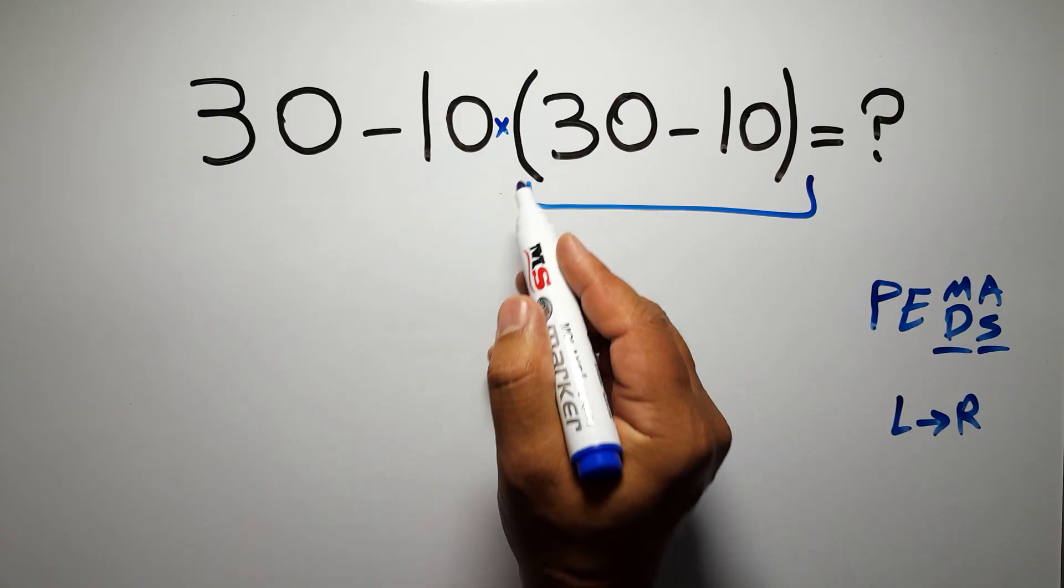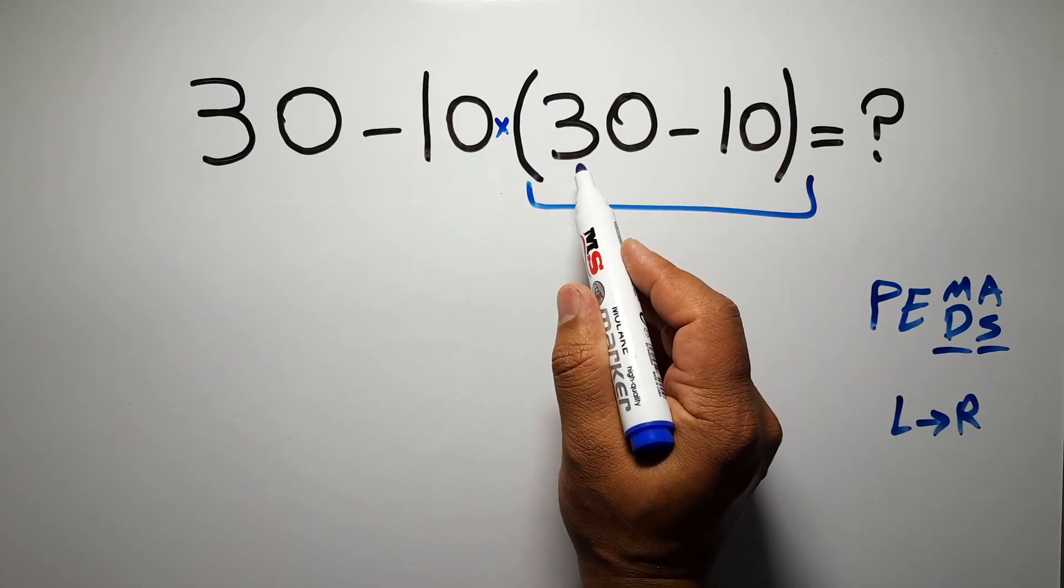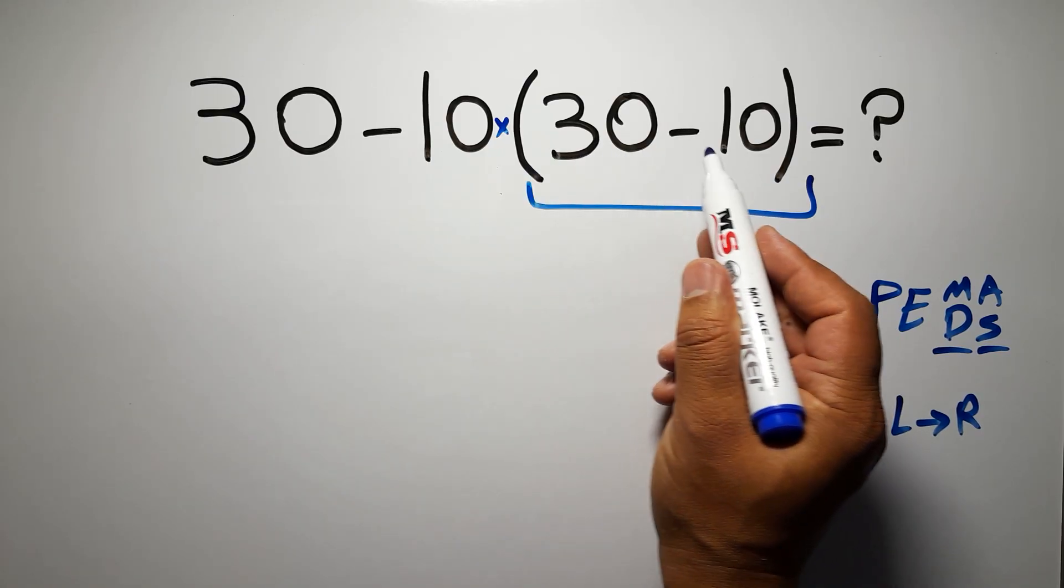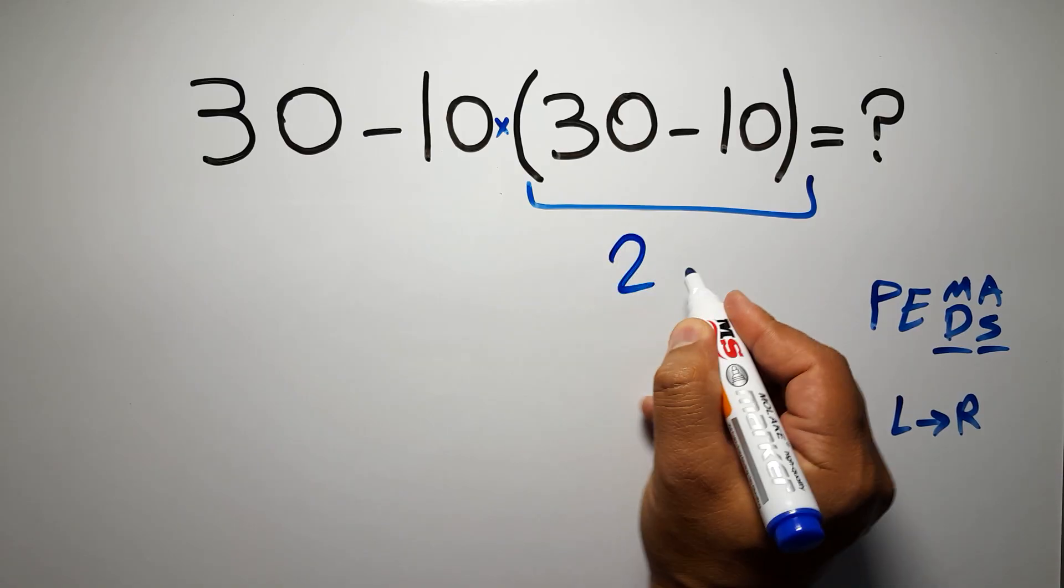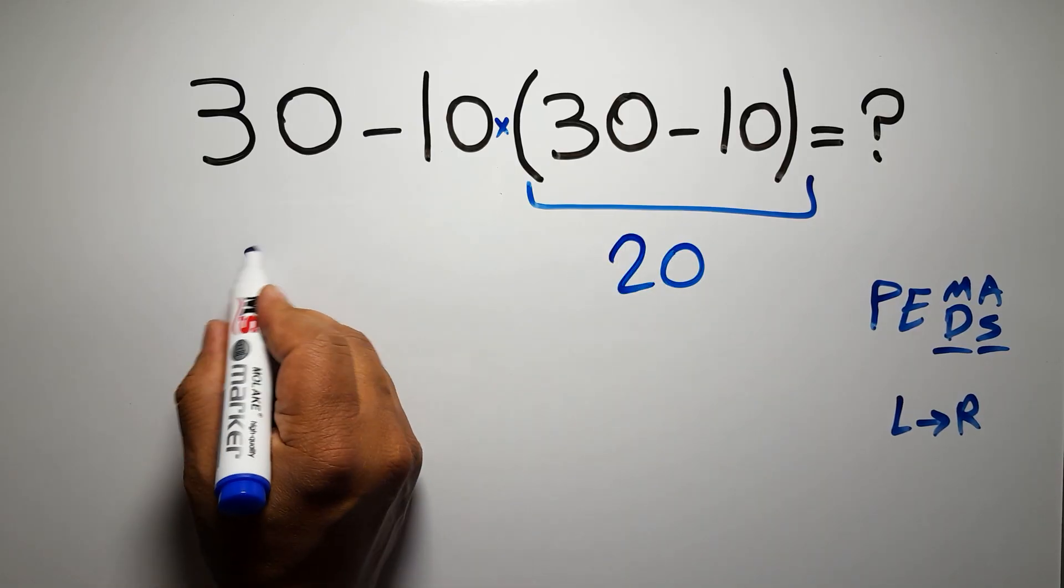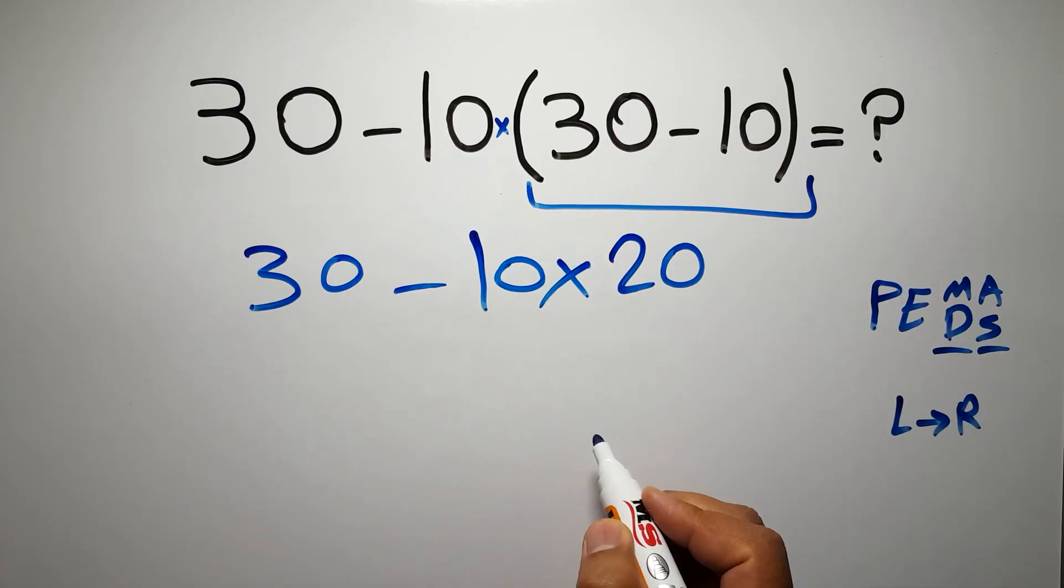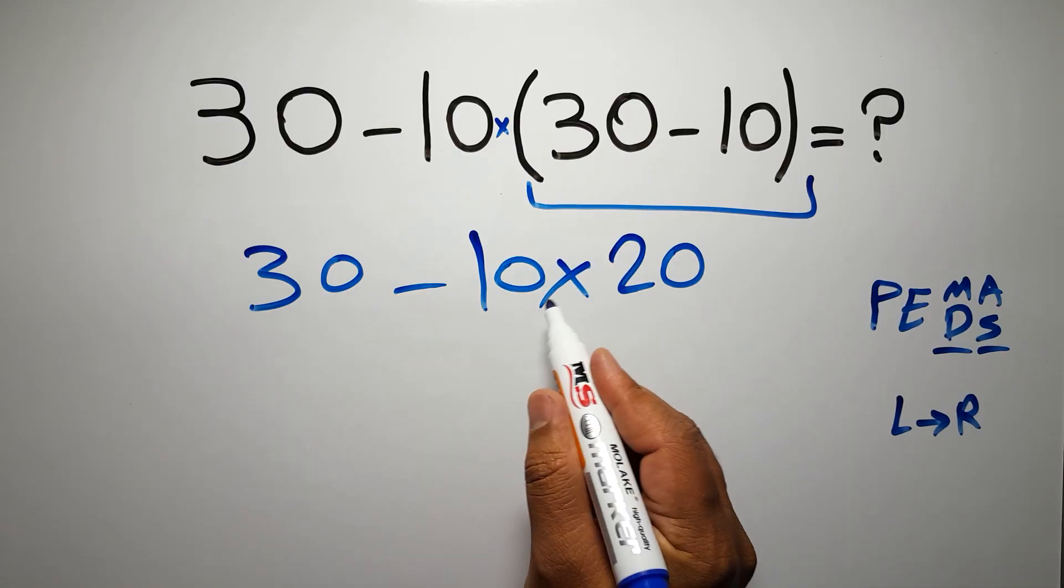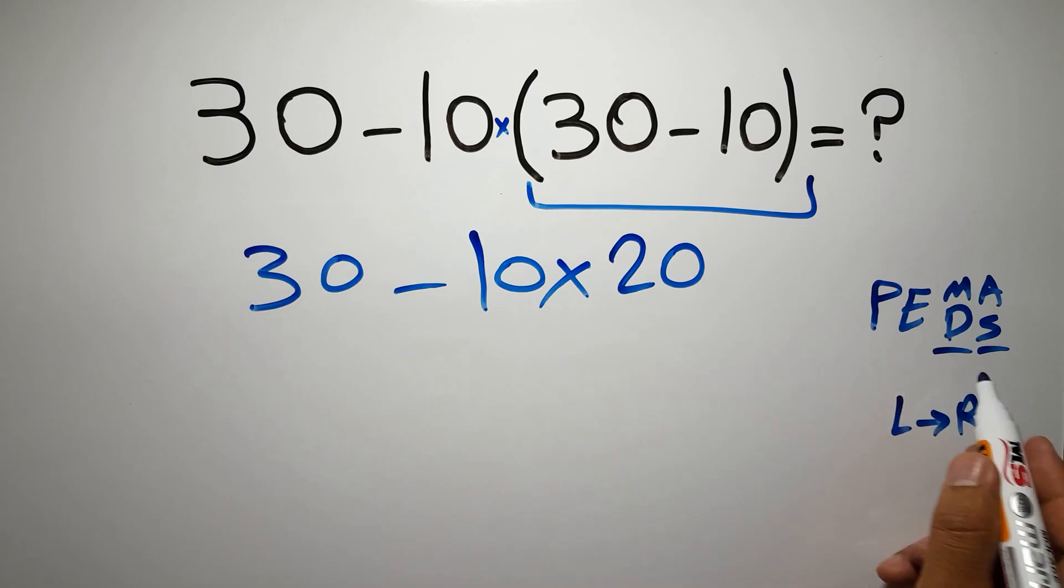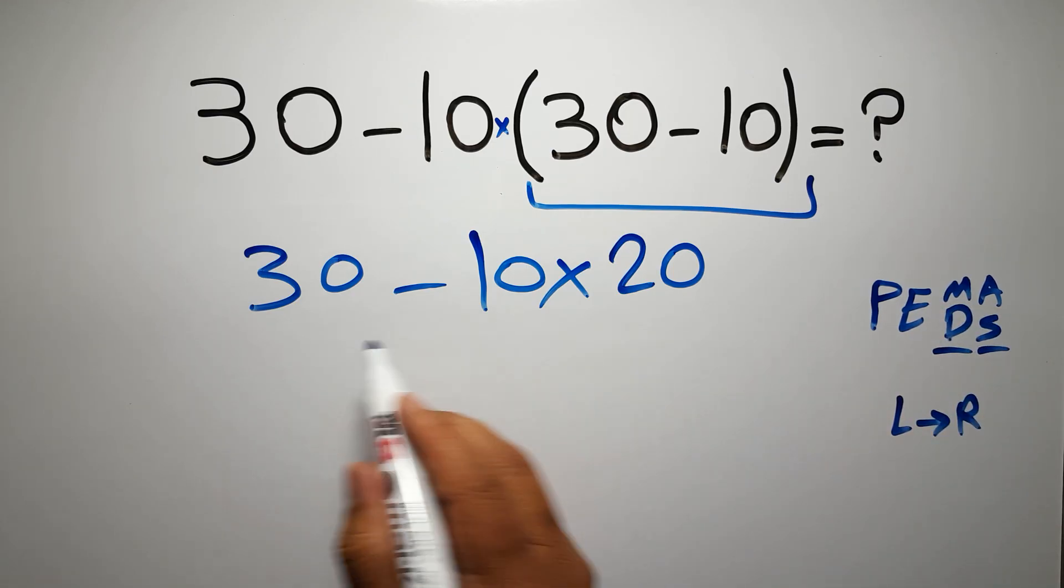So first these parentheses: inside these parentheses we have 30 minus 10, which gives us 20. So 30 minus 10 times 20. Now we have one subtraction and one multiplication. In PEMDAS, multiplication comes before subtraction, so here first we have to do this multiplication.